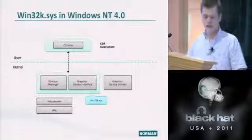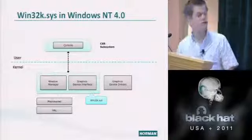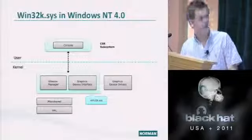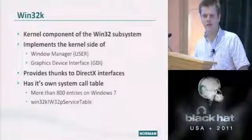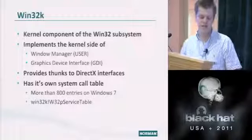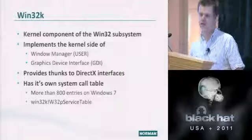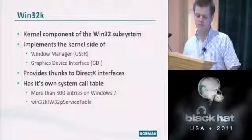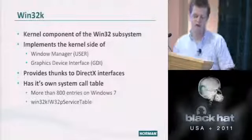In Windows NT 4.0, there wasn't much left in CSRSS. Today there's even less, since they moved out the console as well. Win32K is essentially the kernel component of the Win32 subsystem. It implements the kernel side of the window manager and graphics device interface, provides thunks to DirectX interfaces, and has its own system call table. On Windows 7, there are 800 entries, making the attack surface quite large.